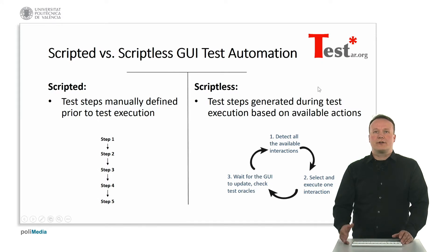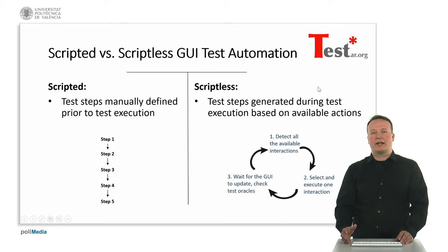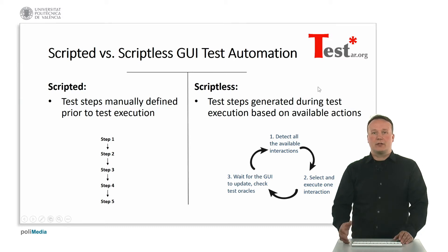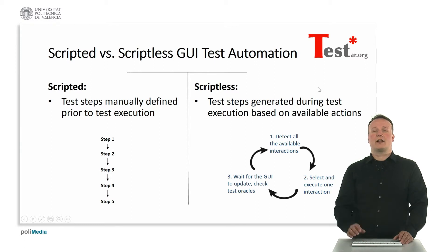First, the tool usually detects what are the available interactions, then it selects and executes one of these interactions, and as a third step it waits for the UI to update and checks for the test oracles. Then this loop goes on.